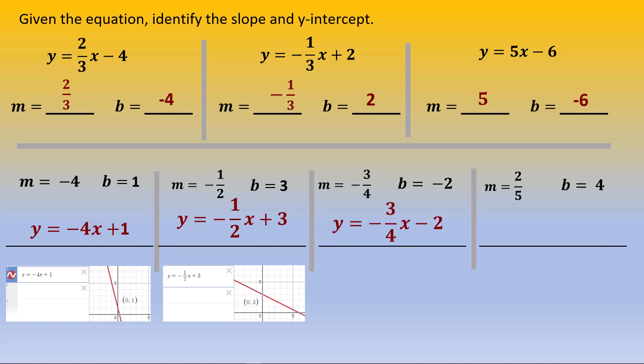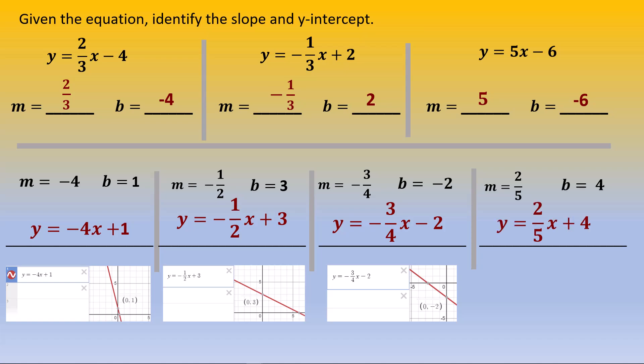m equals negative 3 over 4 and b equals negative 2 produces the equation y equals negative 3/4 x minus 2. You can see the graph as it passes through the point negative 2 on the y-axis, going down 3 and over 4 each time. For slope m equals 2 over 5 and b equals 4, the equation is y equals 2/5 x plus 4, passing through the point (0, 4) and going up 2 and over 5 each time.